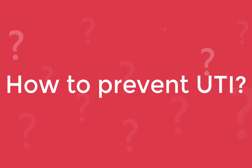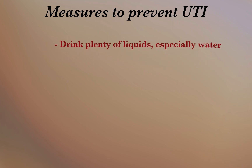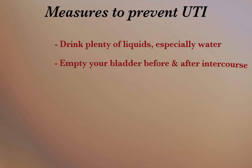So what can one do to prevent UTI? One can take these steps to reduce the risk of urinary tract infections. Drink plenty of liquids, especially water — drinking water helps dilute your urine and ensures that you urinate more frequently, allowing bacteria to flush from the urinary tract before an infection can begin. Another preventive measure is to empty your bladder before and after intercourse.